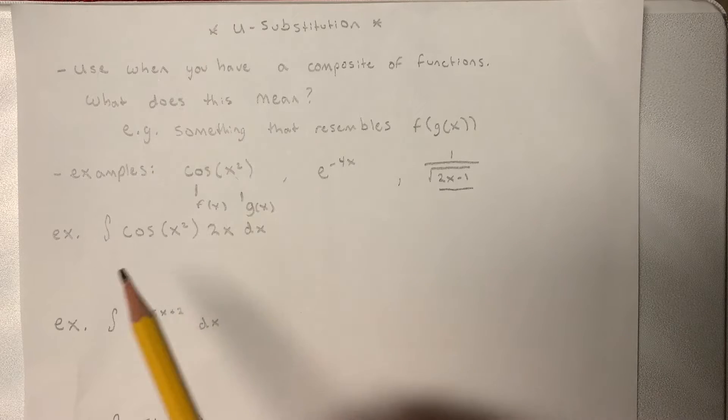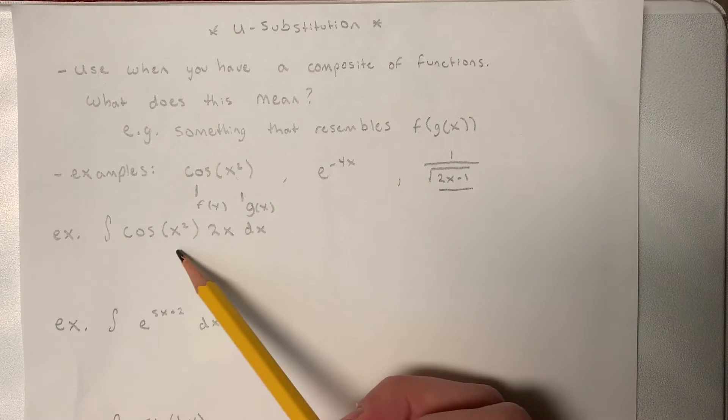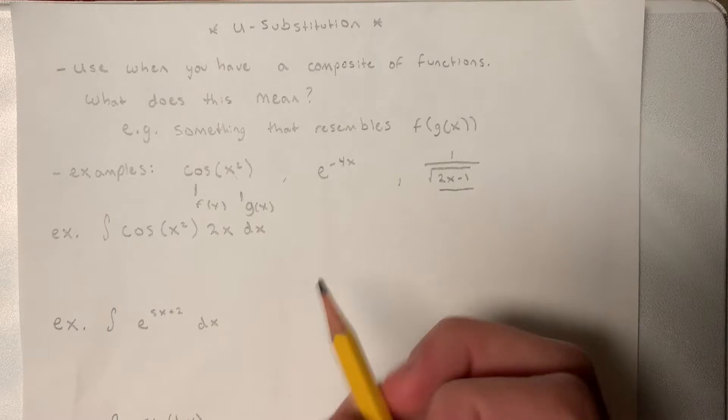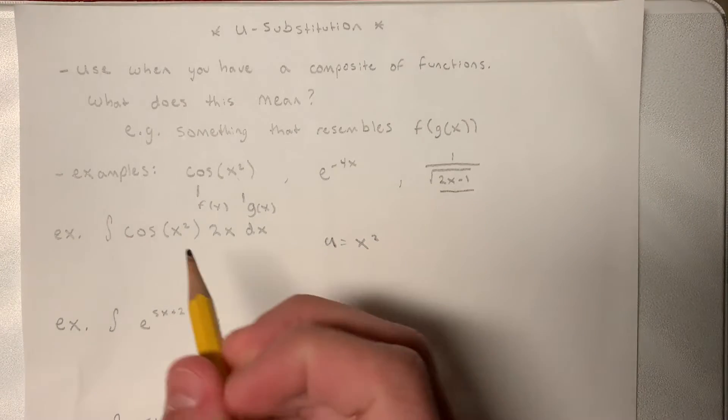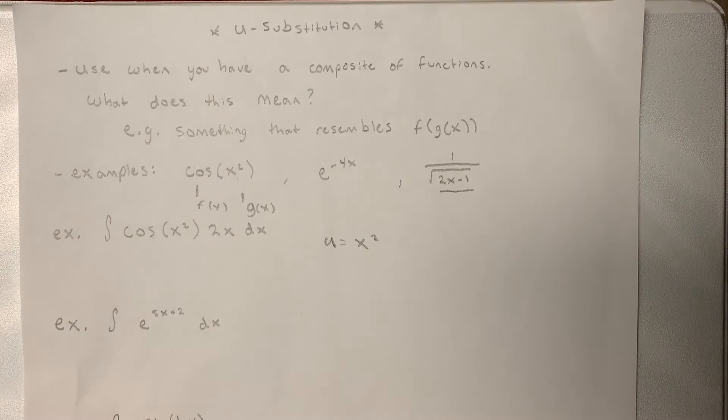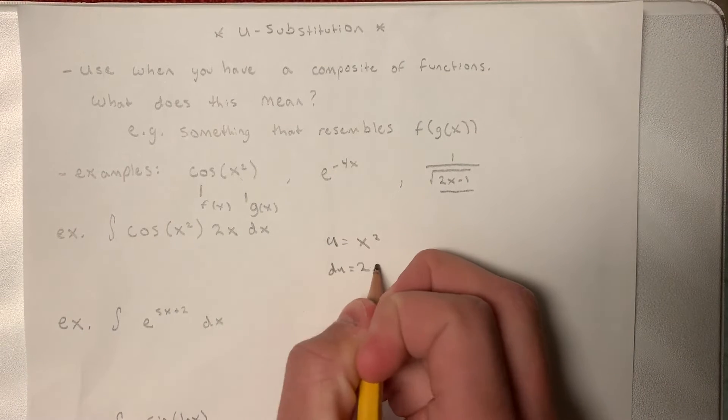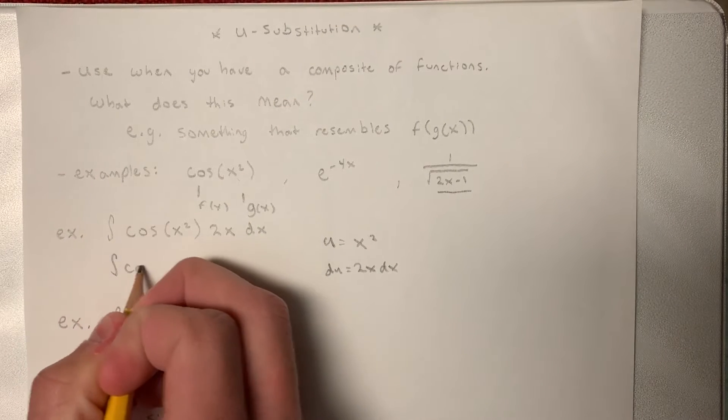So how do we go about solving this first example? The integral of cosine x squared 2x dx. So let's take our u to be x squared, because we see that the x squared is within the cosine function. We take the derivative of that and get 2x dx.